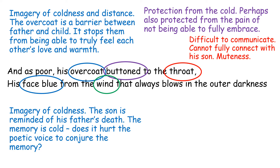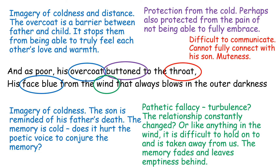His face blue from the wind — again we have more imagery suggesting coldness and distance. Wind here could be a use of pathetic fallacy and it could suggest a turbulence in their relationship. With wind it is constantly blowing, very difficult to determine, much like perhaps the relationship that they had — very difficult to gauge, very difficult to understand, very difficult to pin down. Perhaps this relationship was constantly changing much like the wind, and perhaps this memory is taken away from the son. Maybe the memory fades and leaves emptiness behind much like the wind might take something away.